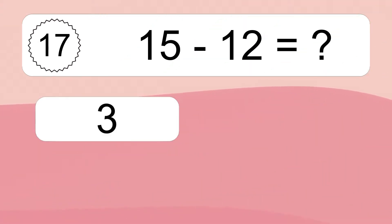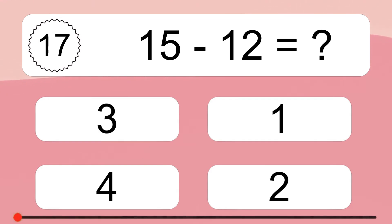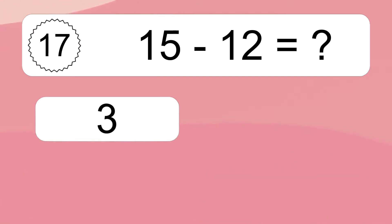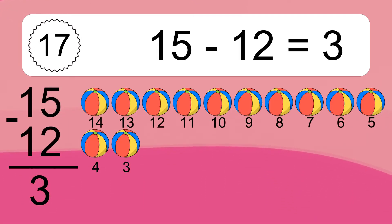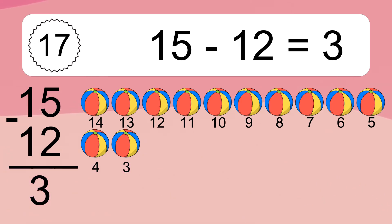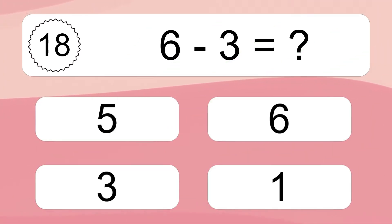15 minus 12 equals what? 15 minus 12 equals 3. Let's count it: 14, 13, 12, 11, 10, 9, 8, 7, 6, 5, 4, 3. 6 minus 3 equals what?